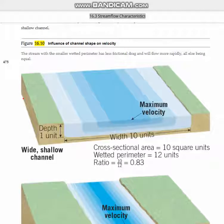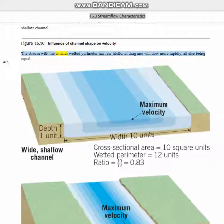Figure 16.10: Influence of channel shape on velocity. The stream with the smaller wetted perimeter has less frictional drag and will flow more rapidly, all else being equal.